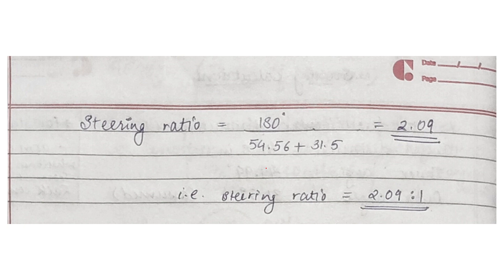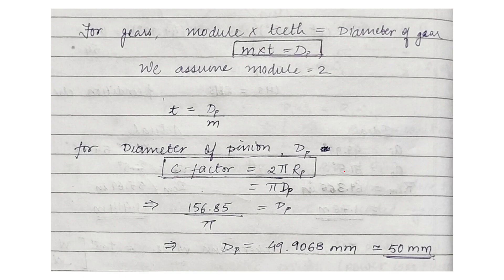From this value we calculate the steering ratio, the diameter of the pinion, the teeth on the rack, the teeth on the pinion. The steering ratio comes out to be 2.09 to 1. For gears the module of teeth, the module times teeth equals the diameter of the gear. We assume the module as 2 because it requires less space and the gear has a lesser weight. We calculate the teeth of the pinion where C factor is given by 2 times pi times radius of the pinion. Therefore the diameter of the pinion comes out to be approximately 50 mm.